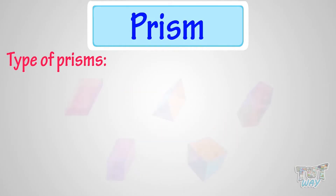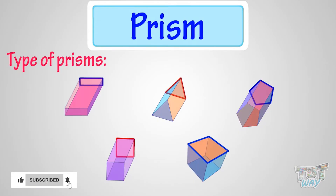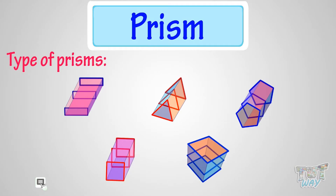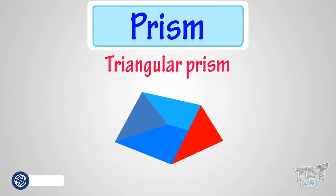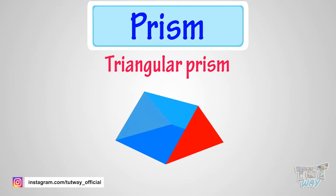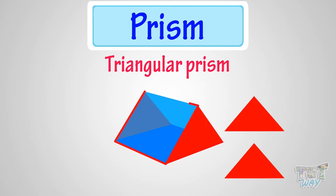There are many types of prisms, depending upon the shape of its top and bottom faces, or its cross-section. The first one is the triangular prism. This is a triangular prism,